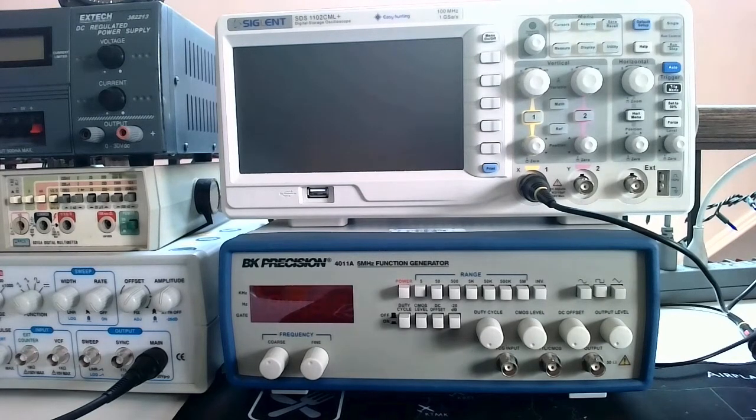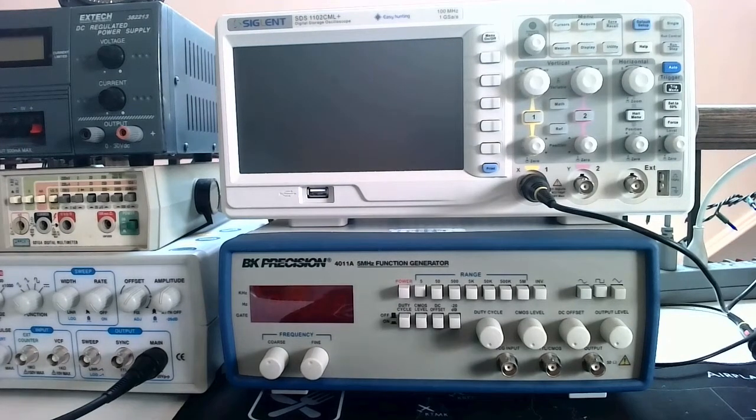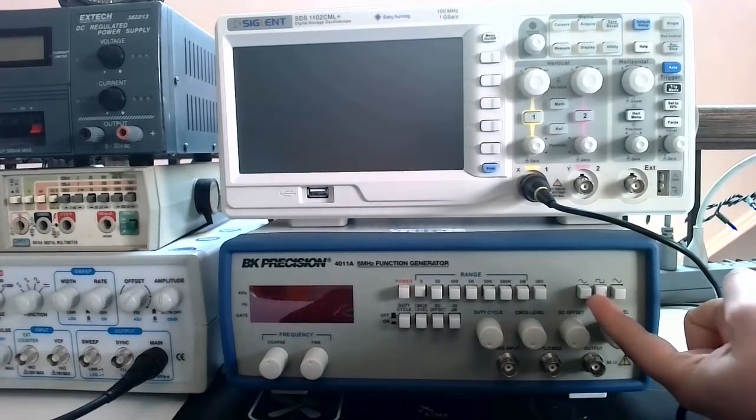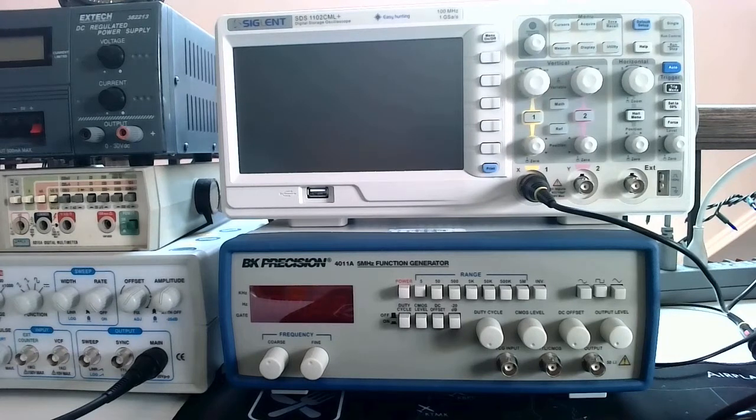This function generator is capable of creating different types of signals: sinusoidal, square, and triangle waves at different frequencies with different DC offsets and different amplitudes. We're going to explore how we can use this device.